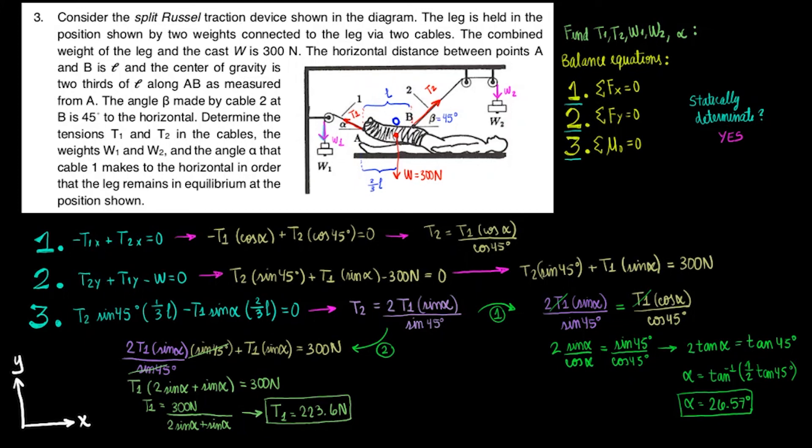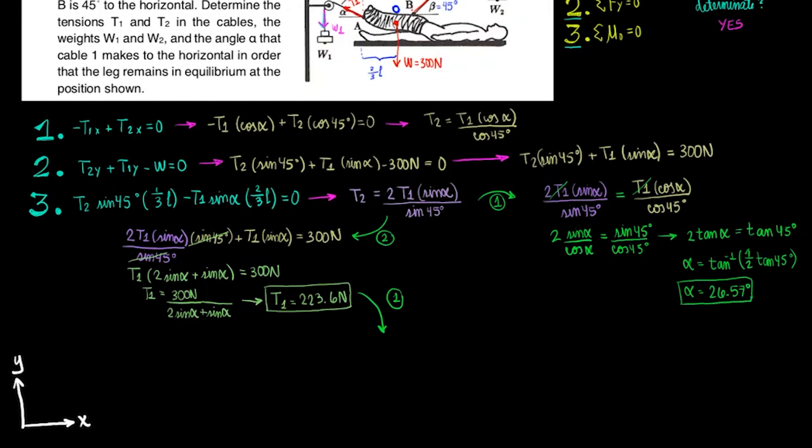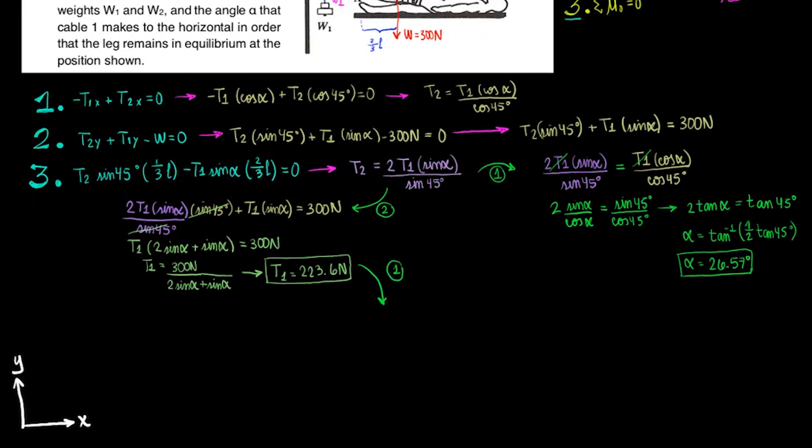Finally, we can plug alpha and T1 into the simplified expression for equation 1. We end up with T2 equals 282.83 newtons. Remember now that it also asked for W1 and W2, but as we concluded earlier, W1 equals T1 and W2 equals T2 and now you're good to go.